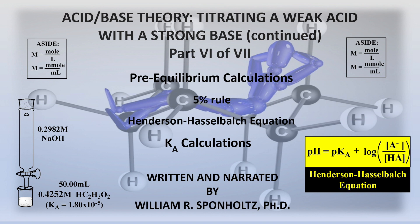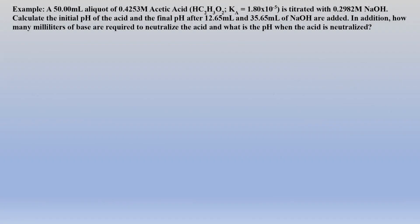We will again focus on calculations that arise when a weak acid is titrated with a strong base. For example, pre-equilibrium calculations, the 5% rule, the Henderson-Hasselbalch equation, various pH calculations, and other concepts as different amounts of a strong base are added to a weak acid. So let's begin with a simple titration where given amounts of sodium hydroxide are added to acetic acid, and we are asked to calculate the final pH after each addition.